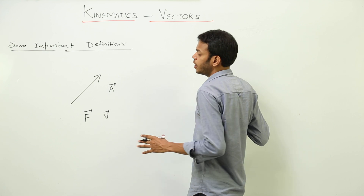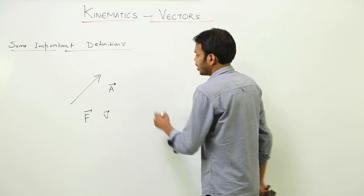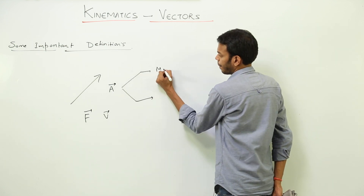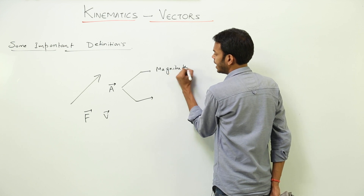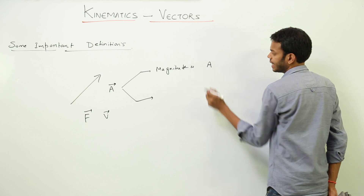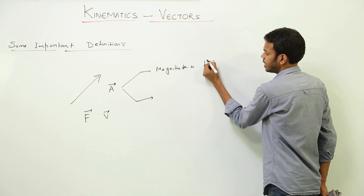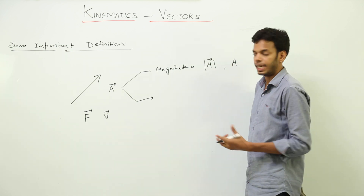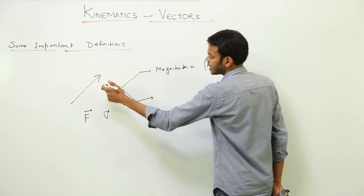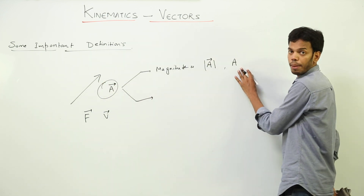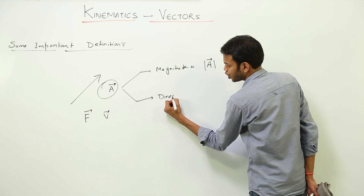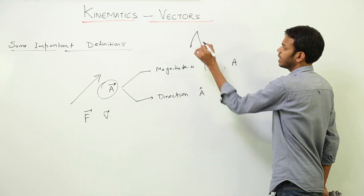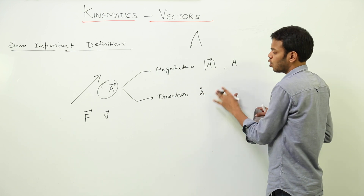We have to represent both magnitude and direction. Magnitude is represented by either the modulus sign around the vector, or simply the capital alphabet without an arrow. With an arrow it means it is the complete vector; without an arrow it means it is only the magnitude. The direction is represented by a vector with a cap — that is, a unit vector.